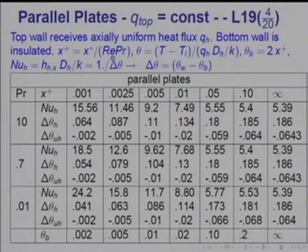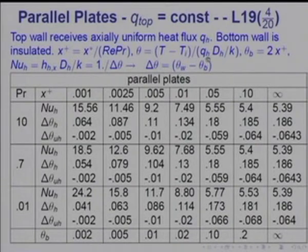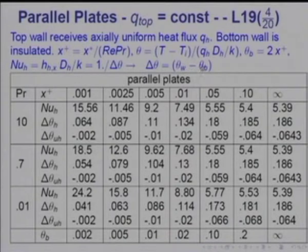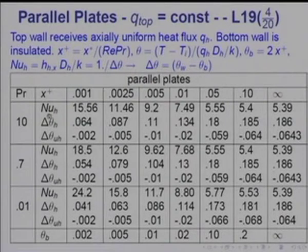X-plus here is simply x divided by d_H times Reynolds times Prandtl. Theta is defined as temperature minus inlet temperature, divided by Q on the heated side times d_H divided by k. Of course the bulk temperature would vary simply linearly — the bulk temperature will vary as 2x-plus — and therefore the Nusselt number would be defined as h·d_H/k equal to 1 over delta-theta, where delta-theta is T_wall minus T_bulk. You will see that plotted for each Prandtl number — I have taken three Prandtl numbers — showing Nu on the heated side, theta_wall on the heated side minus theta_bulk, and theta_wall on the unheated side.